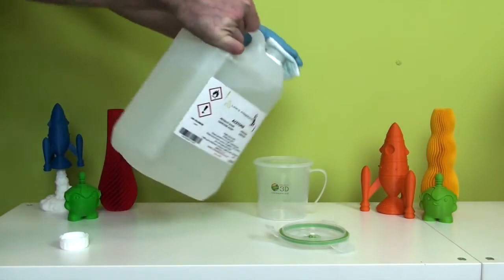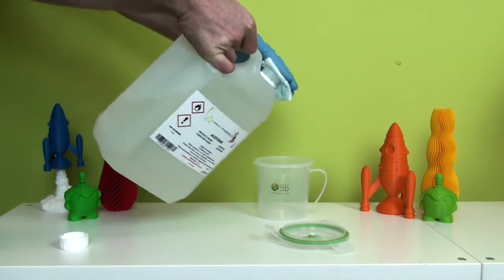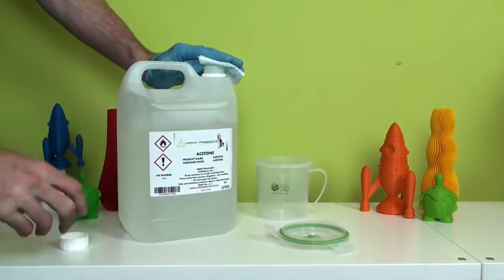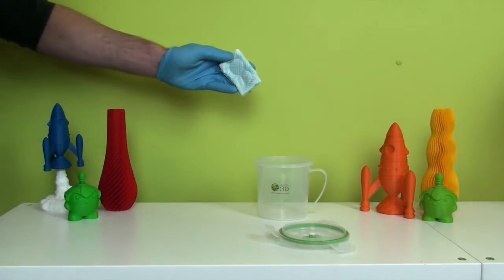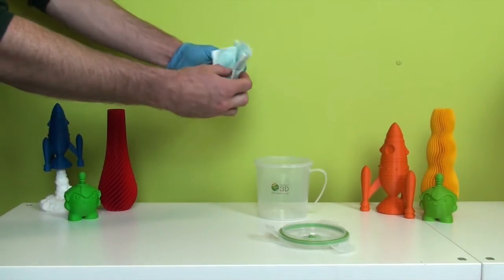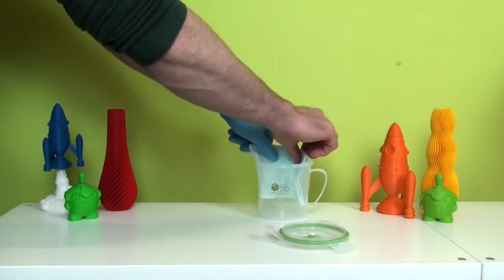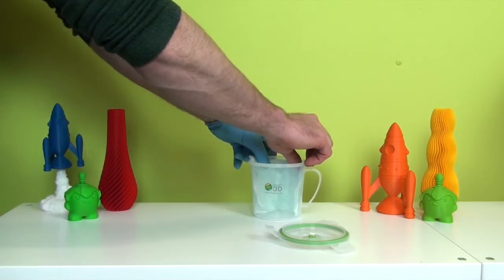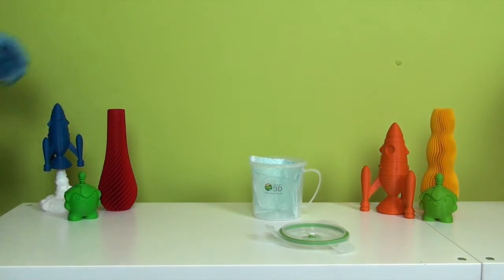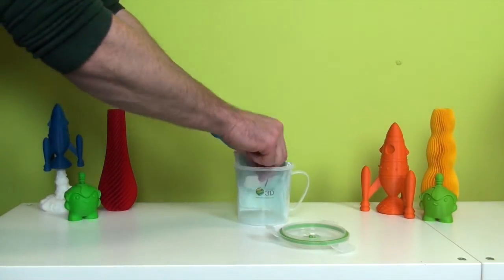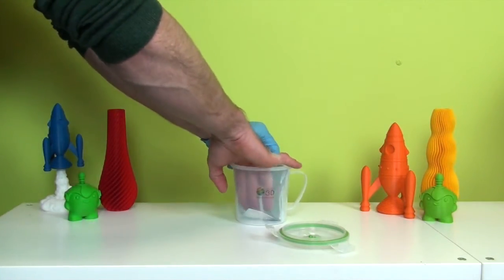Okay, the next thing to do is to add some kitchen foil to the bottom of the container, and this will just protect our print from any acetone liquid that might build up at the bottom of the container.